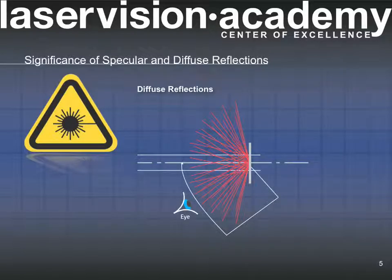Diffused light reflections present a lower potential for ocular injury because the eye absorbs or is exposed to a smaller portion of the overall light. This is also true for skin exposures.